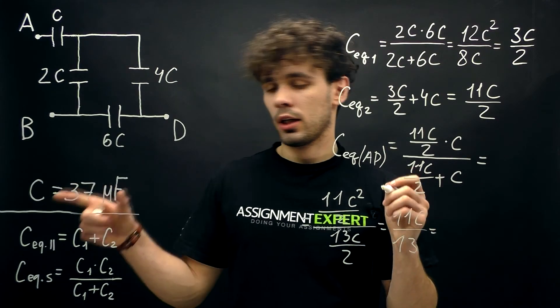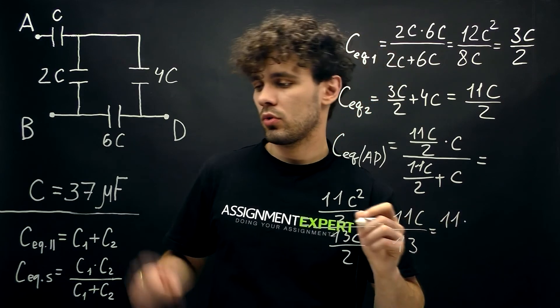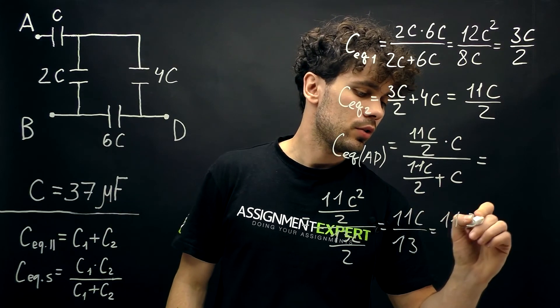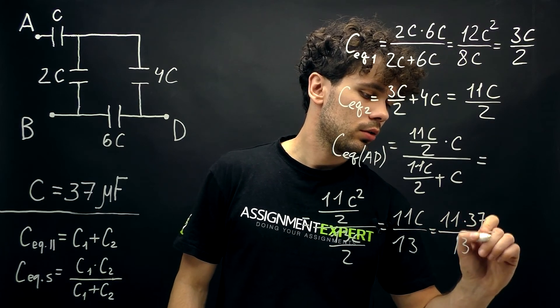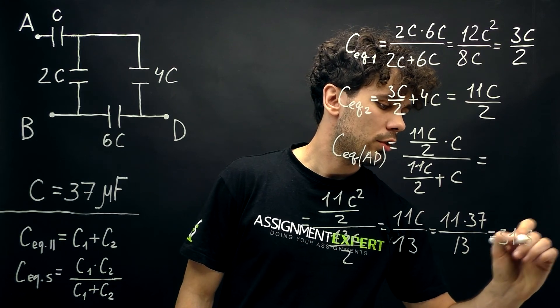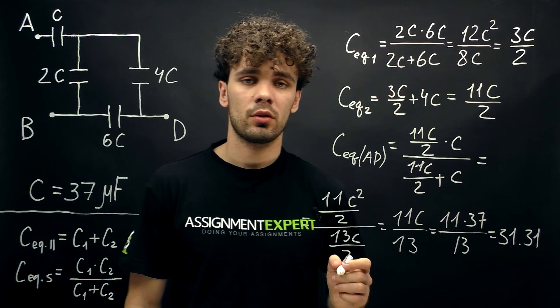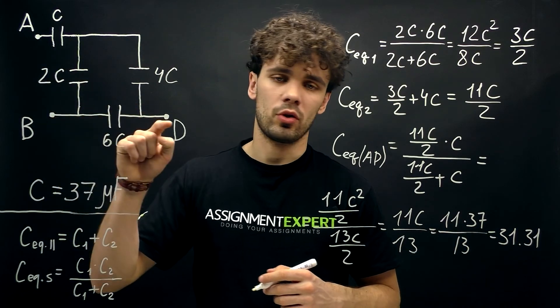And we substitute C equals 37 microfarad. 11 times 37 over 13 gives us 31.31 microfarad. This is the capacitance when we go from point A to point D.